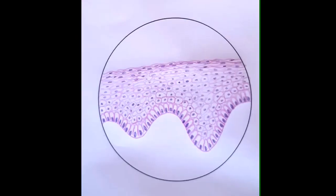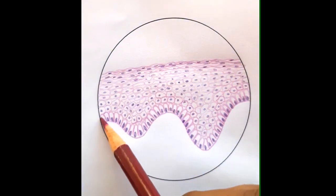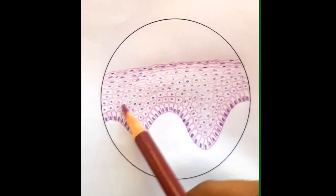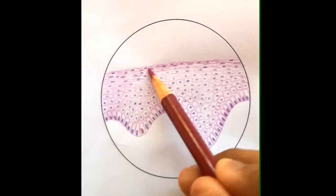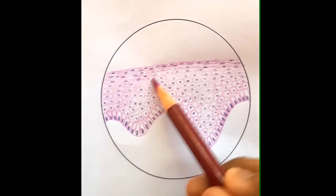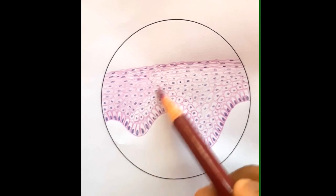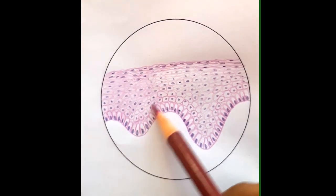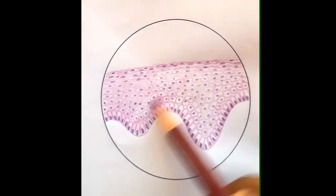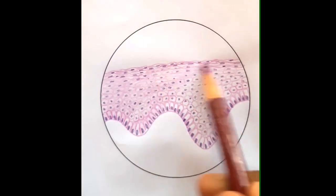The final step is to color the cytoplasm of the cells, which can be done by gently shading the entire diagram. Individual cells need not be picked and shaded. You can just go on shading the entire diagram like this. So the stratified squamous epithelium look can be achieved by gently shading across the diagram.